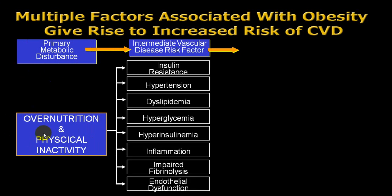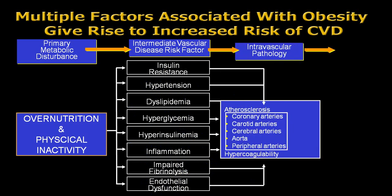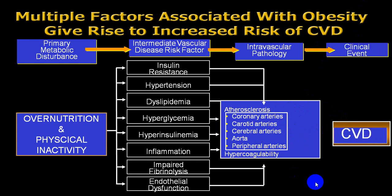Over-nutrition and lack of physical activity lead to increased calorie intake and decreased utilization, producing insulin resistance, hypertension, dyslipidemia, hyperglycemia, hyperinsulinemia, increased inflammatory mediators, impaired fibrinolysis, endothelial dysfunction, and hypercoagulability. This accelerates atherosclerosis, leading to coronary artery disease, cerebrovascular stroke, retinal artery involvement, peripheral artery involvement, renal artery involvement — ultimately increasing ASCVD (atherosclerotic cardiovascular disorders).